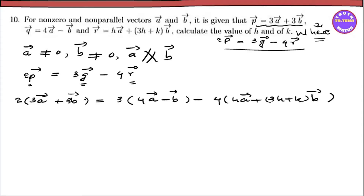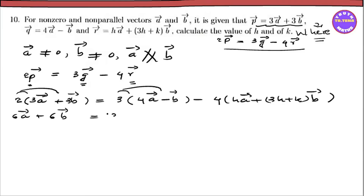Now if we compare coefficients in the equation, since the vectors are non-zero and non-parallel, the coefficients are equal to the corresponding terms: 0 equals 2A vector plus 6A vector plus K times B vector, which equals 6B vector. Then from equation 9, we get 3A vector.